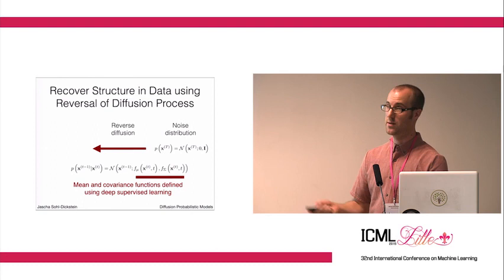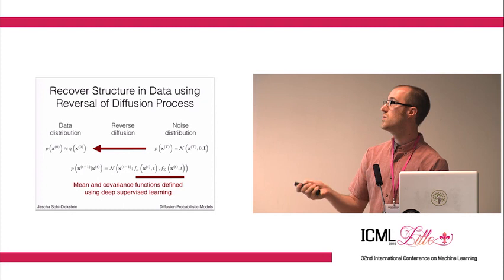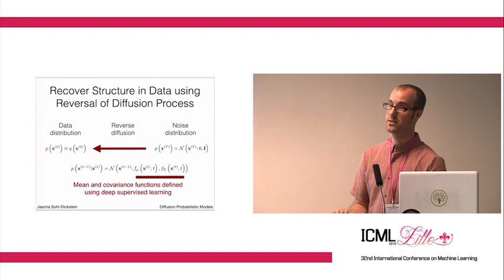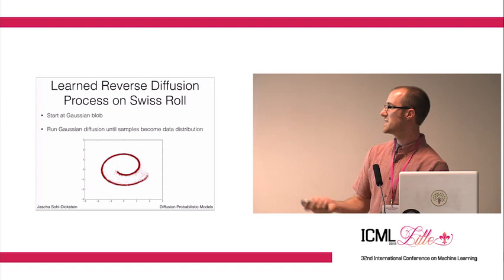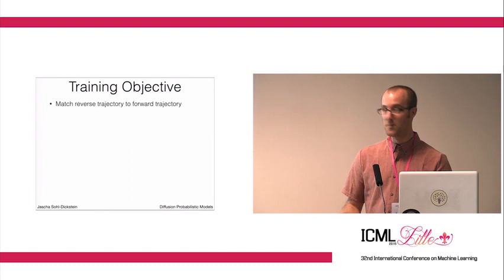If we choose these functions correctly, we end up with our data distribution at time zero. Here again is the toy case. We've now learned these functions for reverse diffusion and if we run our reverse diffusion process, you see we get back the Swiss roll distribution.